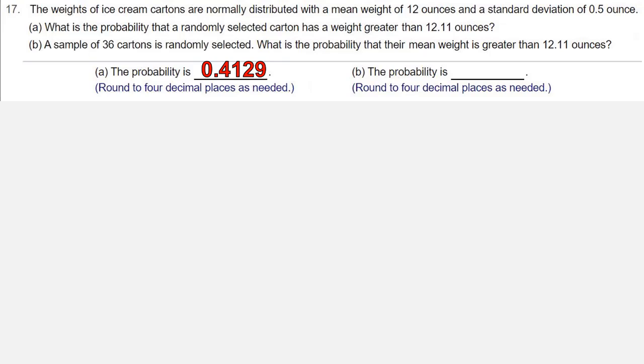In Part B, because we're looking at a group of 36 cartons, this is a central limit theorem problem. So we need to find mu of x-bar and sigma of x-bar. Mu of x-bar is equal to mu, which is 12. Sigma of x-bar is sigma divided by the square root of n, which is going to be 0.5 divided by the square root of 36, which is 0.083333333.